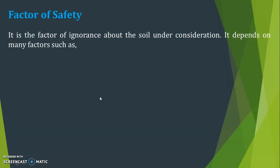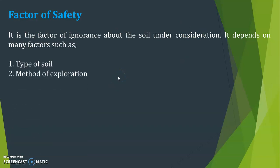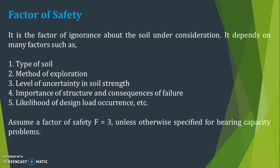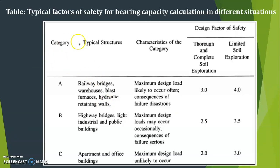Next, let us see what the factor of safety is. It is the factor of ignorance about the soil under consideration and depends on many factors such as type of soil, method of exploration, level of uncertainty in soil strength, importance of structure, consequence of failure, and likelihood of design load occurrence. Assume a factor of safety F = 3 unless otherwise specified for bearing capacity problems.